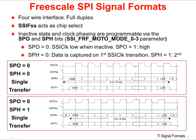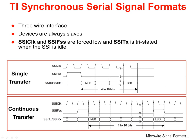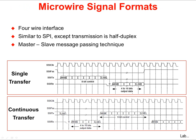The Freescale SPI signal format is a full duplex 4-wire interface. The inactive state of the clock and the clock phasing are programmable via the SPO and SPH bits. The TI synchronous serial format is a 3-wire interface where devices are always slaves. The clock and frame signal pins will be forced low and the transmit pin will be tristated when the SSI module is idle. The Microwire signal format is a 4-wire interface similar to the SPI port, except that transmission is only half duplex.